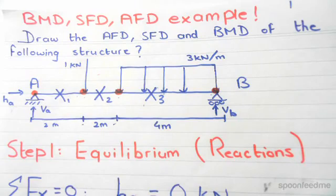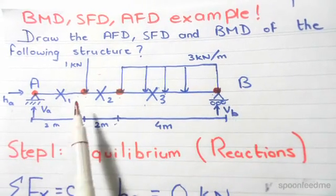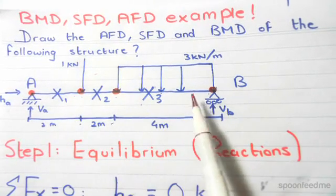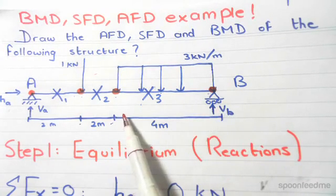We have a simply supported beam, pin at one end, roller at the other. We have a 1 kN point load 2 meters from the pin and a 3 kN per meter UDL that starts from the roller and spans 4 meters out to the left.